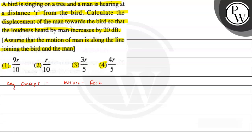According to the Weber-Fechner equation, the loudness of sound L is directly proportional to log base 10 of intensity I. So the difference in loudness, delta L, can be written as: delta L = 10 × log base 10 of (I2/I1). This gives the difference between two intensities of loudness, and the result is in decibels.